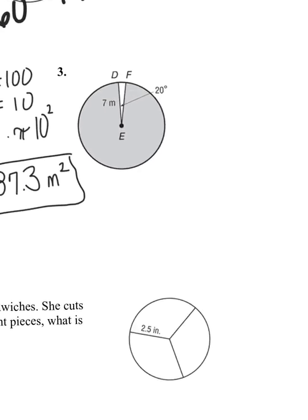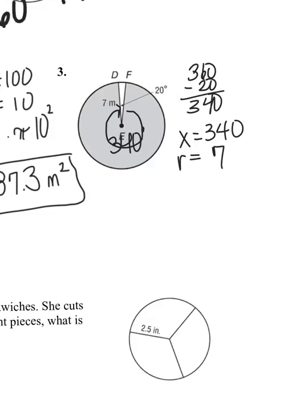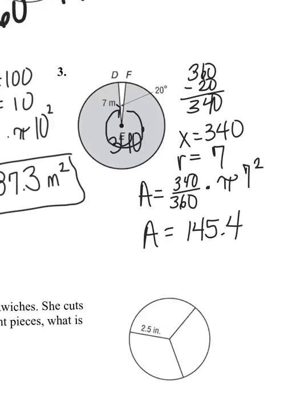Question number three. I see this 20 here. Common mistake is just to say that x equals 20, but that 20 is not in the shaded area. I need the degrees in the shaded. We know every circle has 360 degrees, so that 20 is that little white piece. So 360 minus the 20, my shaded area is 340 degrees. So x equals 340, my radius equals 7. The area of this circle equals 340 out of 360, which is most of the circle, times pi times 7 squared. The area of this circle equals 145.4 meters squared.